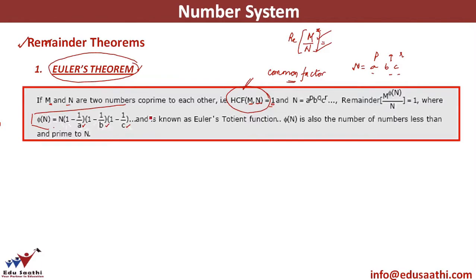This is also known as Euler function or Euler totient function. Now what are a, b, c? a, b, c are the prime factors that we have obtained already. So these are the prime factors that we have obtained.